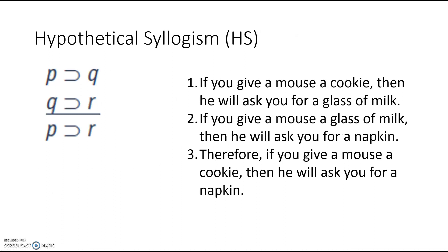The next rule is hypothetical syllogism: If P, then Q. If Q, then R. It follows that if P, then R. Here's the illustration: If you give a mouse a cookie, then he will ask you for a glass of milk. If you give a mouse a glass of milk, then he'll ask you for a napkin. Therefore, if you give a mouse a cookie, he will ask you for a napkin. That is a valid argument form.